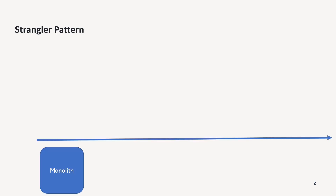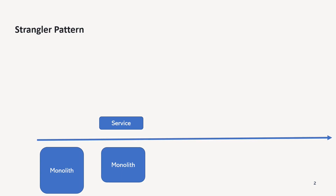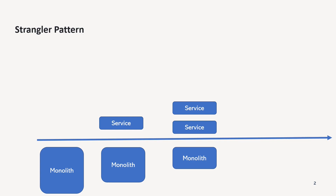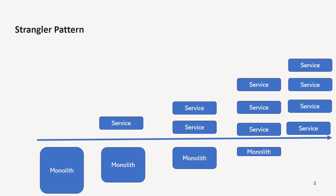We decompose the monolithic application into smaller web services. New functionality does not go to the old application — we create separate microservices. Over time the monolithic application decreases, and after some time we get a fully functional microservices-based system. During this journey there are transient states when both legacy and modern applications co-exist and need to talk to each other.